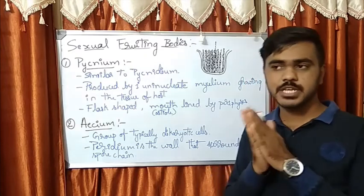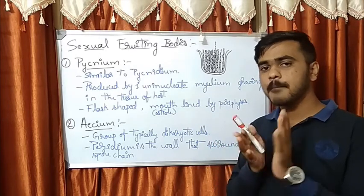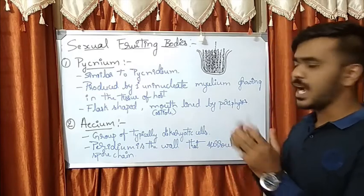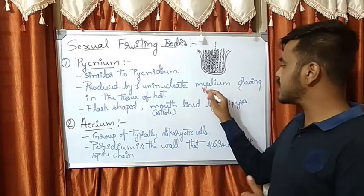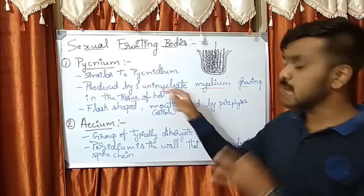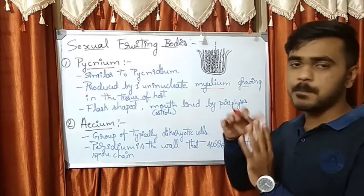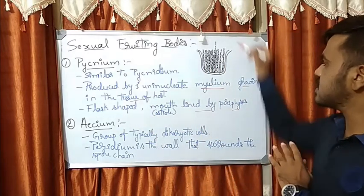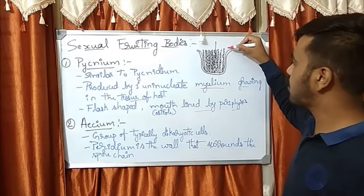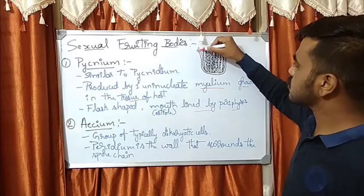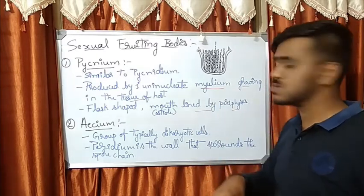Among sexual fruiting bodies there are four major ones. The very first is the pycnium. The pycnium is very similar to the pycnidium seen in asexual fruiting bodies — it is also flask-shaped with a mouth called the ostiole. It is produced by uninucleate mycelium growing in the tissue of the host. The mouth is lined by periphyses, which help rupture the host and enter the cells.